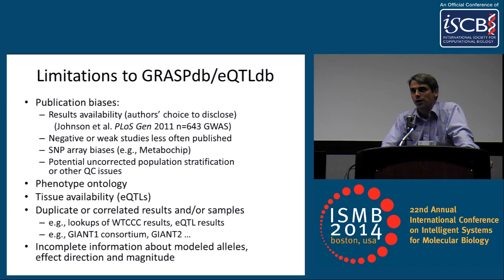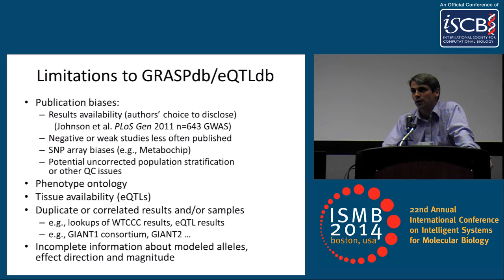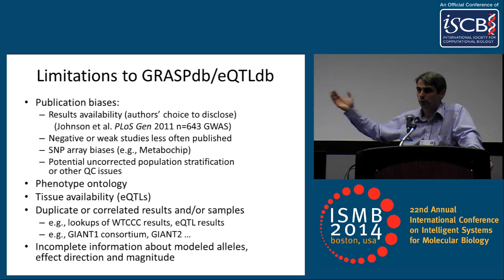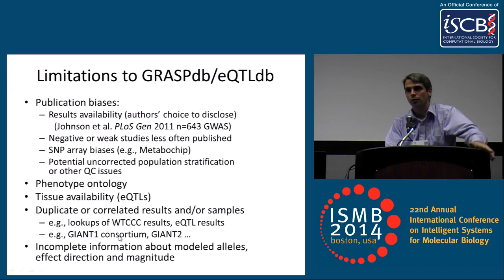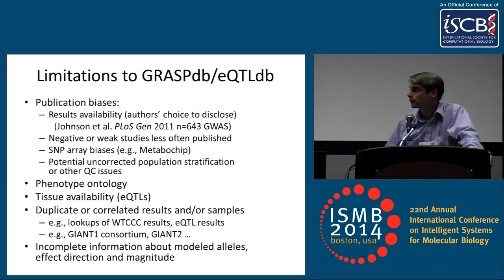It's important to acknowledge limitations. There are obviously limitations of the literature. Phenotype ontology is a very challenging area. Tissue availability in terms of eQTLs is still a huge rate-limiting factor. We have issues of duplicated or correlated results and samples, in part because of lookups of prior papers' results, and we try to filter those out — that takes a lot of work. We also have the problem where, say, a giant consortium does GWAS for BMI, then grows from 100,000 to 200,000 samples and repeats, with some overlap in samples that we can't really disentangle. We're often also missing information about the actual modeled alleles and the direction of effect.